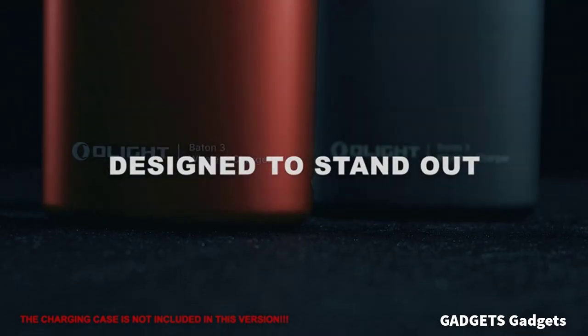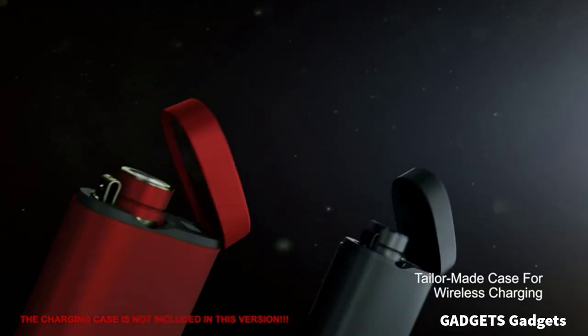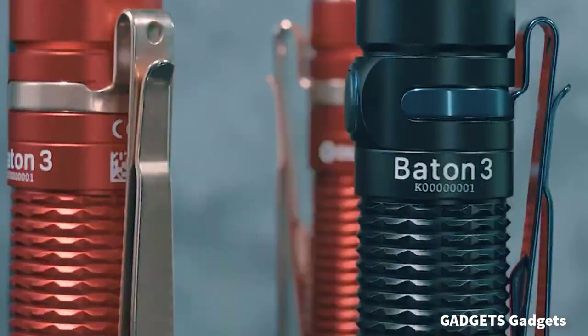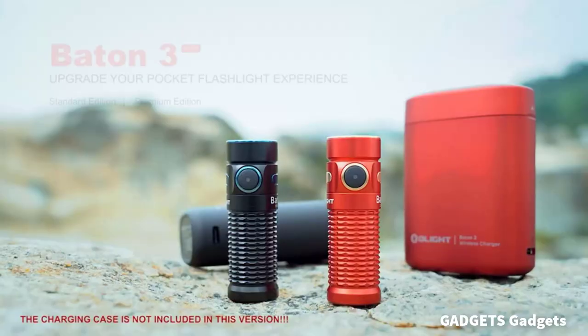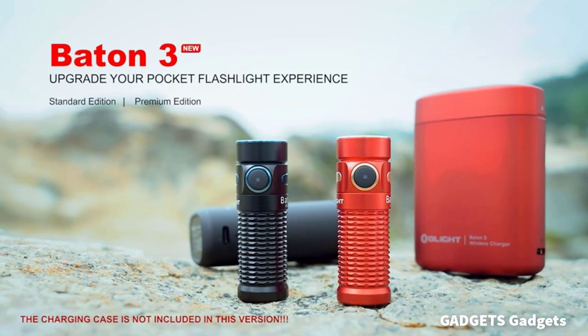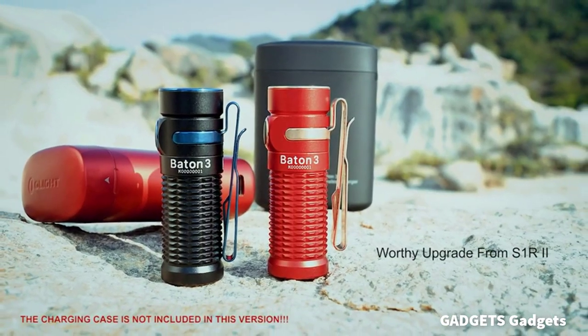The Batten 3 delivers a huge output of 1,200 lumens, a 20% brightness increase, and up to 166-meter throw, a 14% increase over the S1R2.